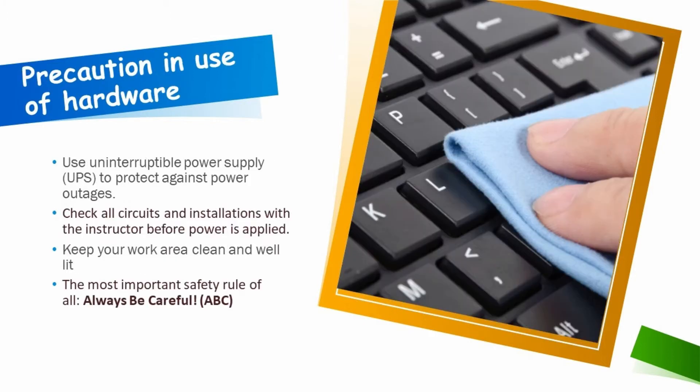First of all, we're going to talk about UPS — Uninterrupted Power Supply. When the power goes off, your computer can still remain on. That's for those of you using desktops. If you're using a desktop computer, it is very important that you use a UPS to protect your desktop against power outage. Unlike a laptop — most of us already use laptops — laptops come with batteries, so you do not use a UPS when you use a laptop.